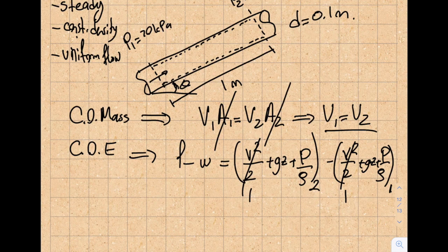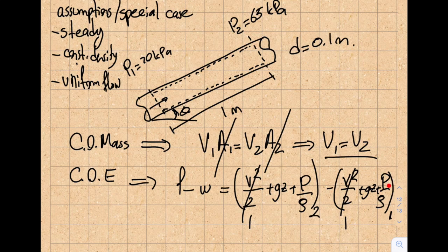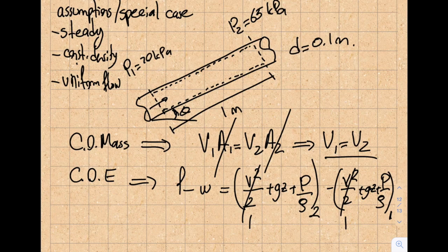What will happen to the pressures is this is P2. P2 is given to me, so it's 65 kPa. P1 is 70 kPa, so I do know those. How about the Z? So let's draw a datum.